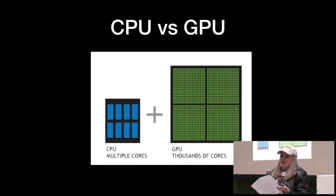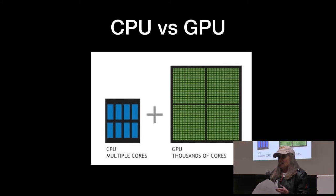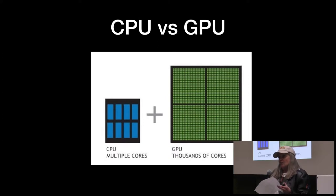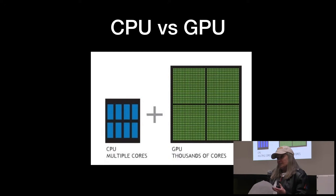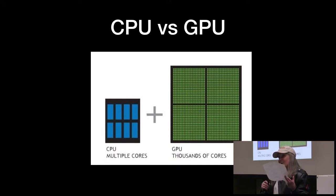For example, one of the equations in diffuse lighting is N dot L. What that means is the normal to a certain pixel — that vector — the cosine of that vector, and the vector from the light to the pixel. You can run that program on thousands of pixels at a time, and so you get this calculation in microseconds, which is really cool.